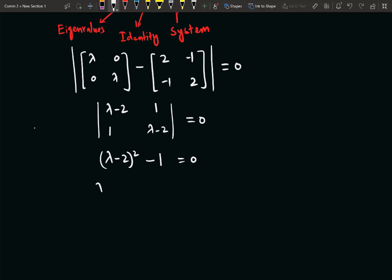So just open this square: it is λ² - 2λ + 4 - 1 = 0. So it will be λ² - 2λ + 3 = 0.